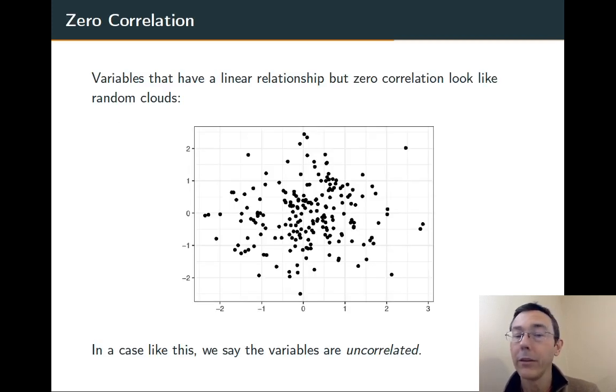If you have a linear relationship but no correlation, 0 correlation, it looks like a random cloud. We say the variables are uncorrelated.